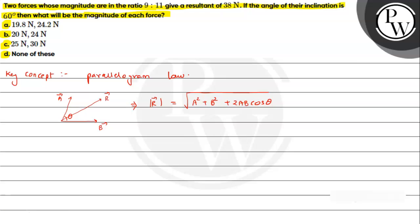Here in the question we have two forces given. We have the magnitude ratio given as f1 is to f2, that is 9 by 11. The resultant is 38 newton and we have the angle of inclination theta given.